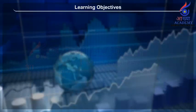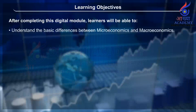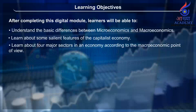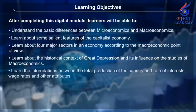Learning Objectives. After completing this digital module, learners will be able to: understand the basic differences between microeconomics and macroeconomics, learn about some salient features of the capitalist economy, learn about four major sectors in an economy according to the macroeconomic point of view, learn about the historical context of the Great Depression and its influence on the studies of macroeconomics, and learn the interrelations between the total production of the country and rate of interests, wage rates and other attributes.